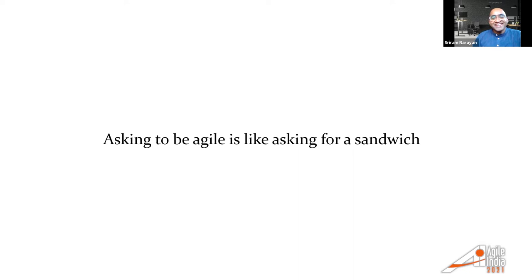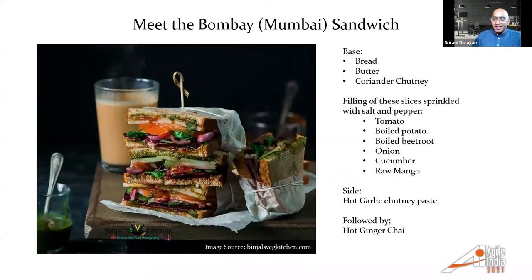Okay, there are a few. So the way they make that sandwich — not everybody does it this way, but quite a few do. That's really what I knew growing up as a sandwich. I have a helpful picture here. It's nearly five to six different vegetables, some raw, some boiled, along with coriander chutney, butter, and a hot garlic chutney paste on the side. You have one or two of these sandwiches and follow it up with a masala chai or ginger chai. This is what I knew growing up.